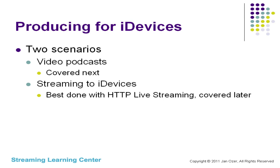We've covered H.264, which is the compression technology you'll be using to produce for pretty much all the iDevices you'll be targeting. Here's the overview of what we'll be covering next: one is video podcast, where you're creating video that's going to be distributed to iPods via tethered delivery — via iTunes or directly from your computer using a cable, not wirelessly or via cellular. The second category is streaming to iDevices, which we'll cover after the video podcast area.